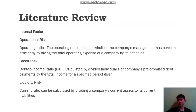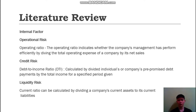Now let's look at the internal factors. For operational risk, it is measured by operating ratio, which indicates whether management has performed efficiently by dividing total operating expenses by net sales. For credit risk, it is measured by debt-to-income ratio (DTI), calculated by dividing an individual's or company's periodic debt payments by total income for a specified period. For liquidity risk, it is measured by current ratio, calculated by dividing the company's current assets by its current liabilities.